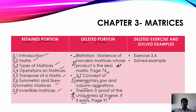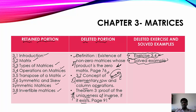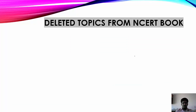Section 3.7 was a major topic where a 3-mark problem was asked every year, but it has now been removed. Exercise 3.4 has been completely deleted because it contains elementary row and column operation problems. There is no need to solve exercise 3.4. You can see the images of these deleted topics in this video.